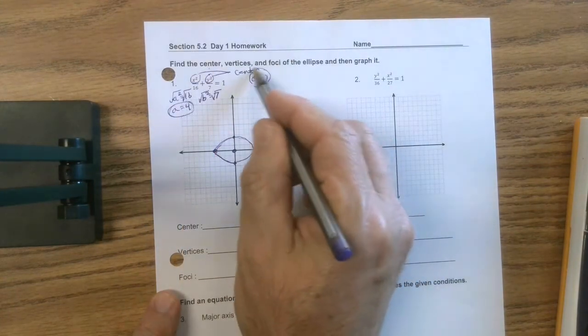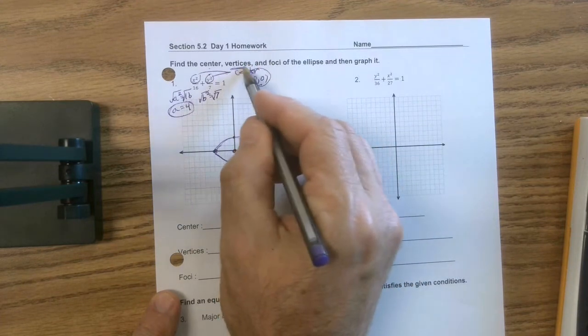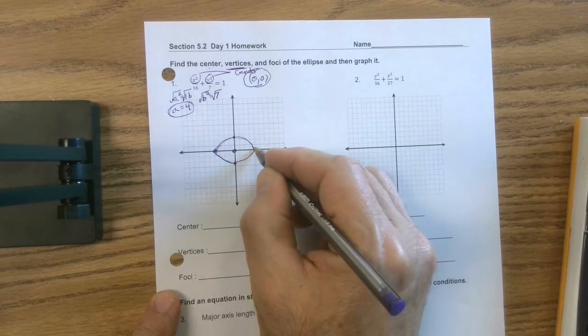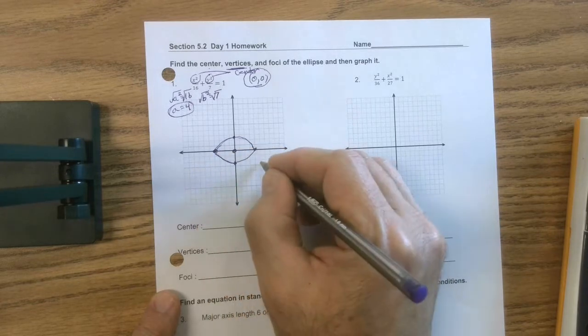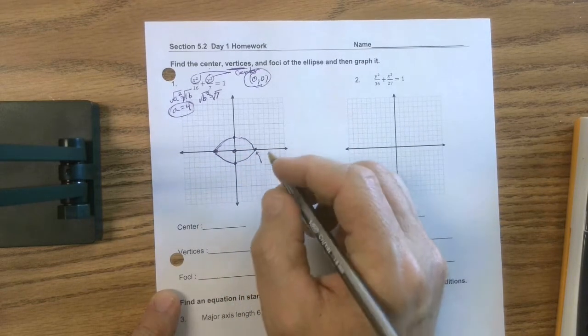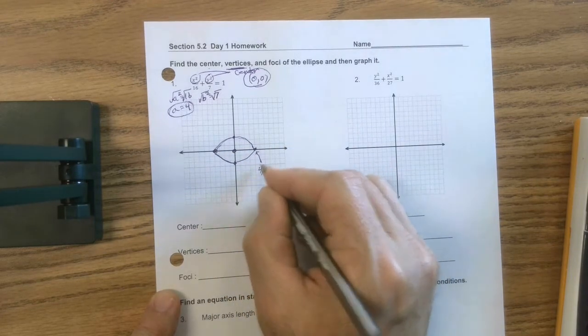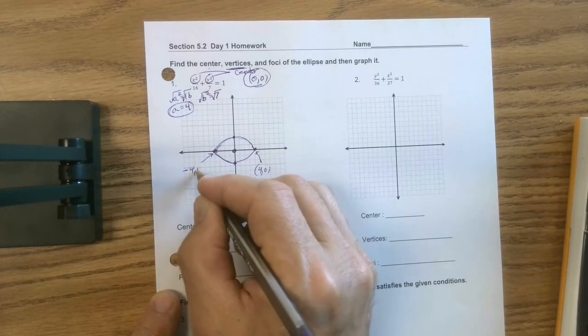But it says find the center. All right, we found it. Where are the vertices? Well, the vertices are the endpoints of the major axis. So we're going to go ahead and call it what it is. It's 4, 0. And then that's negative 4, 0.